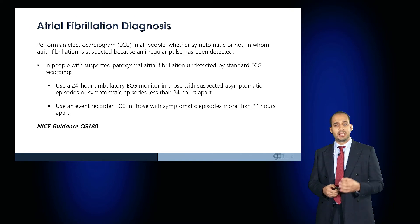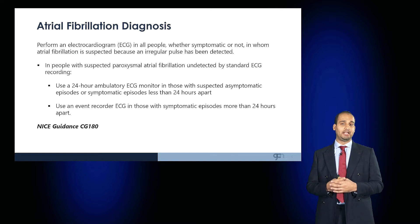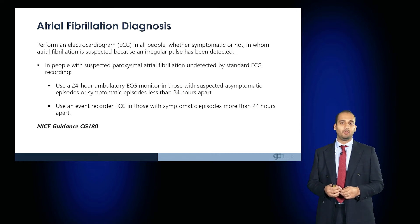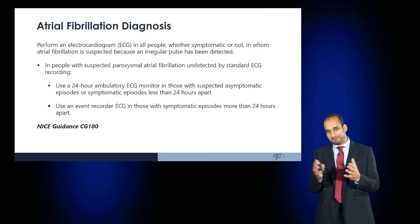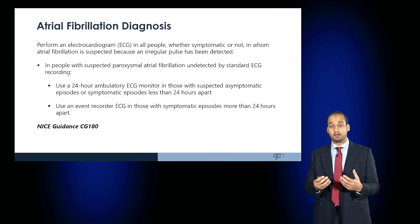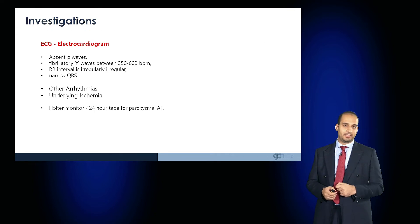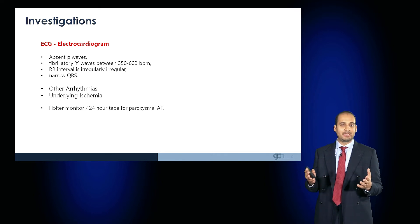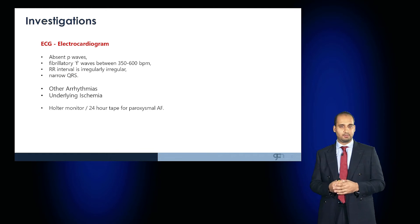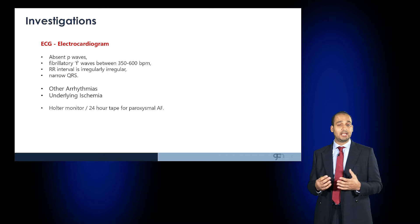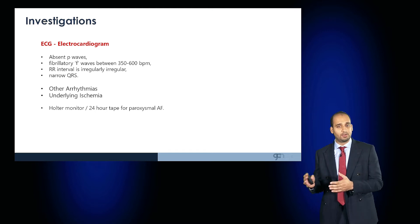To diagnose atrial fibrillation, an ECG should be performed in all people — whether symptomatic or not — in whom you suspect AF from an irregular pulse or clinical findings. In patients with paroxysmal or suspected paroxysmal AF where the ECG is normal, offer a longer recording using a 24-, 48-, or 72-hour Holter tape. If the arrhythmia is still missed, a loop recorder can be offered. The ECG demonstrates absent P waves, fibrillatory F waves at 350–600 beats per minute, an irregularly irregular RR interval, and a narrow QRS. It can also help identify other arrhythmias or underlying ischaemia.